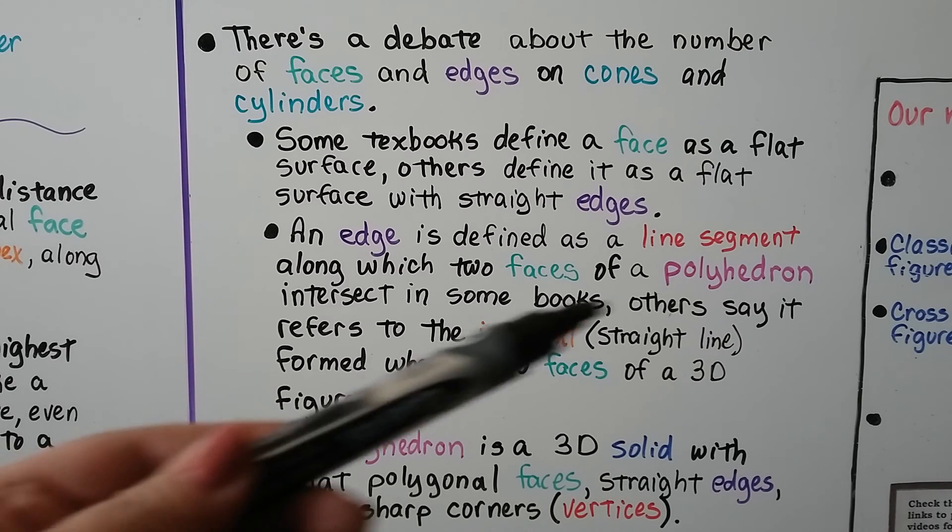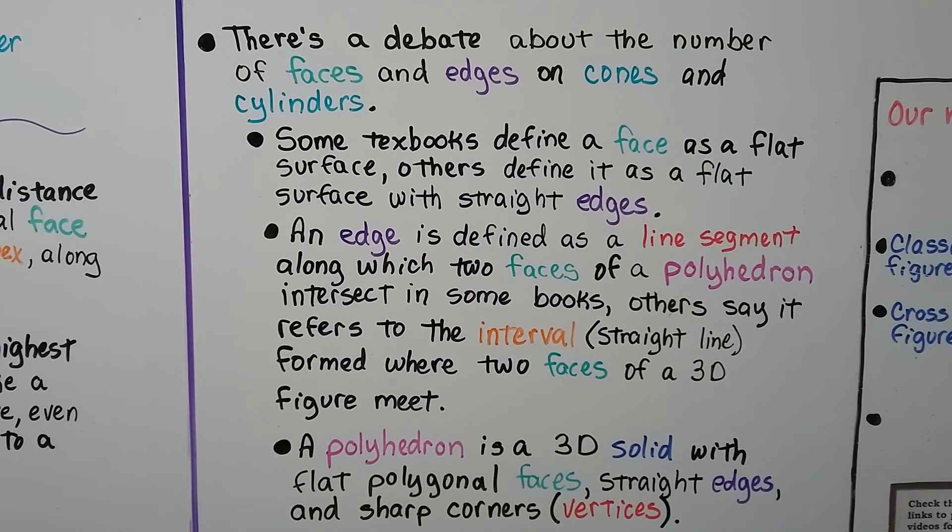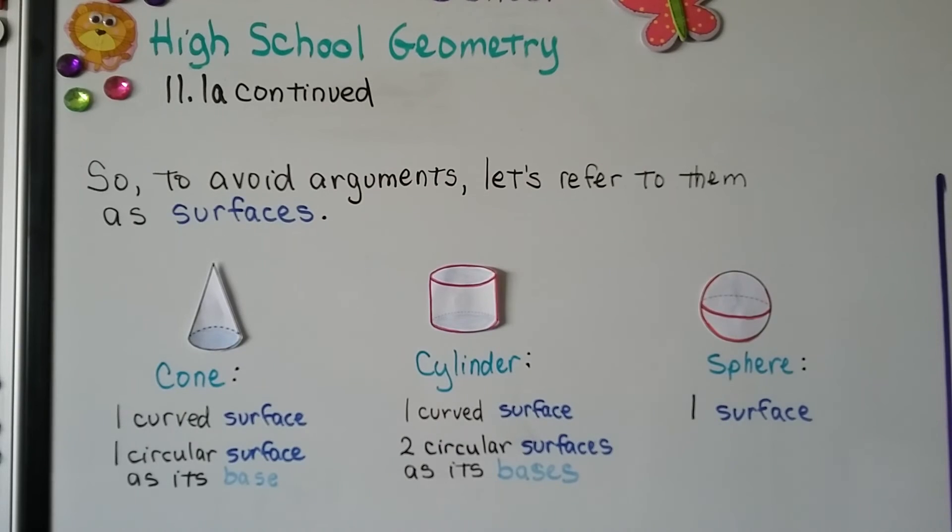Well, a polyhedron is a 3-D solid with flat polygonal faces, straight edges and sharp corners, vertices. So, would a sphere have a face? There's no straight edges on a sphere. So, to avoid arguments, let's refer to them as surfaces and not faces, okay?